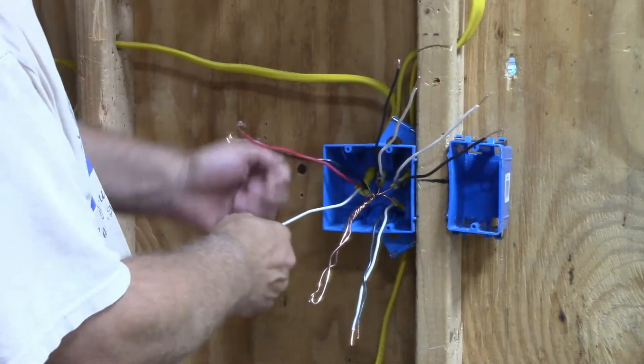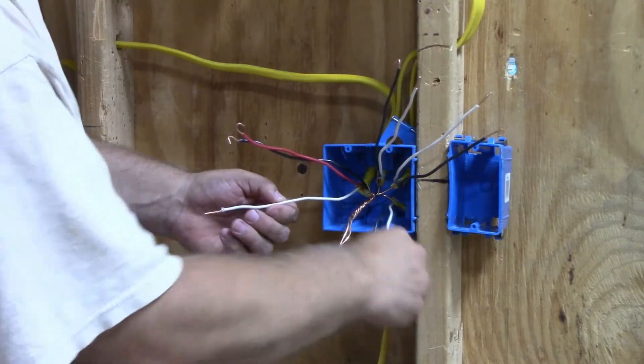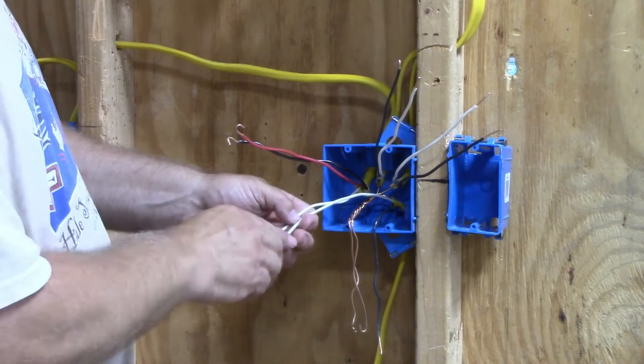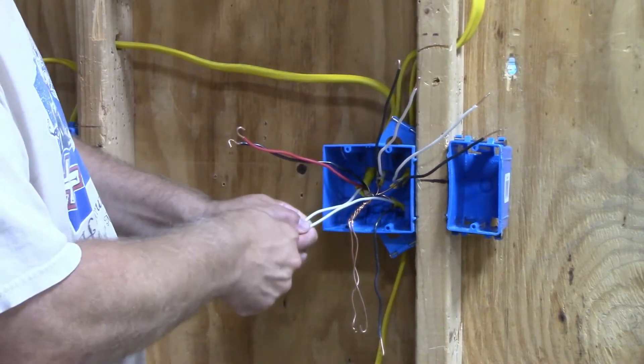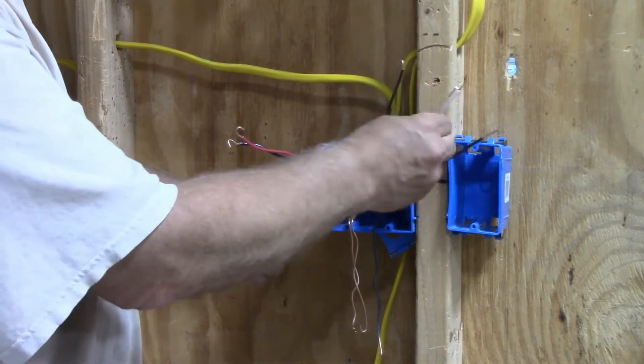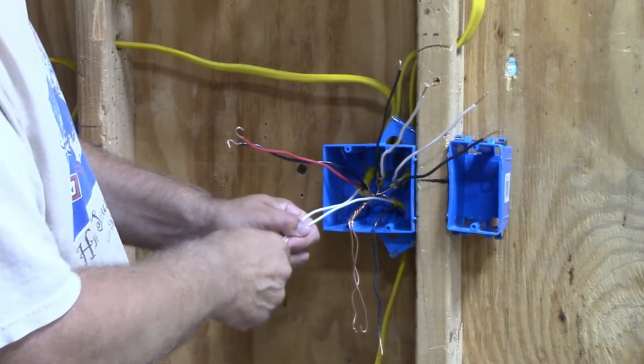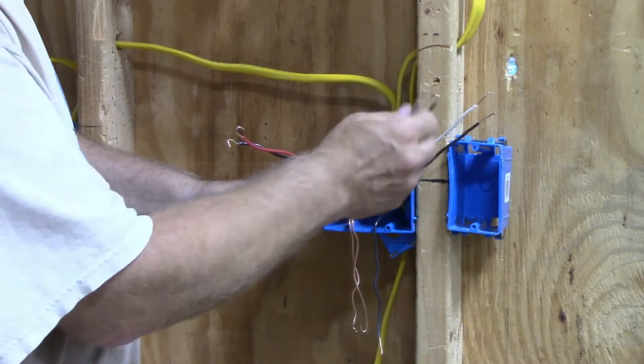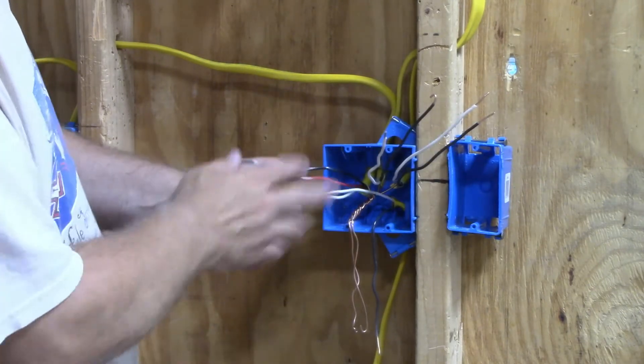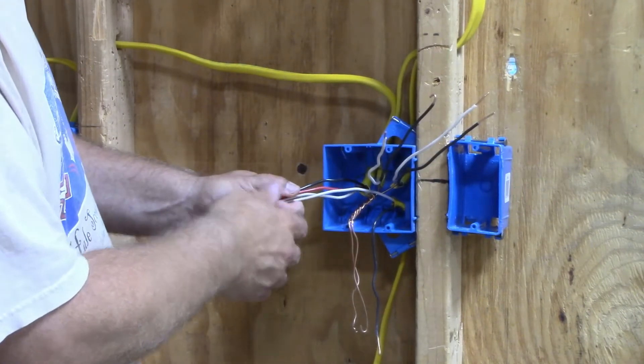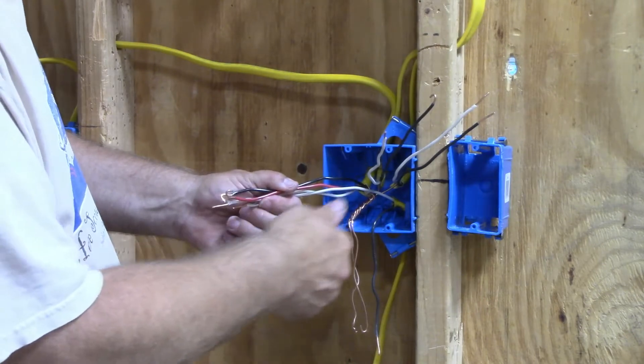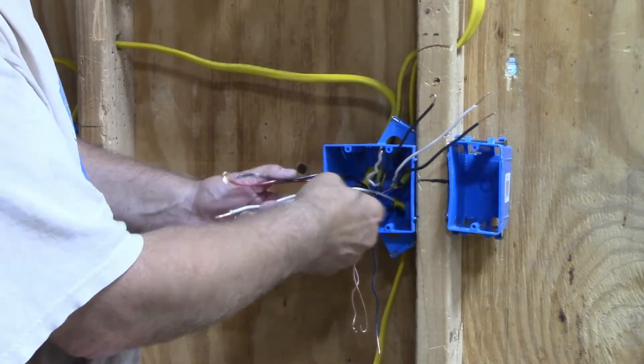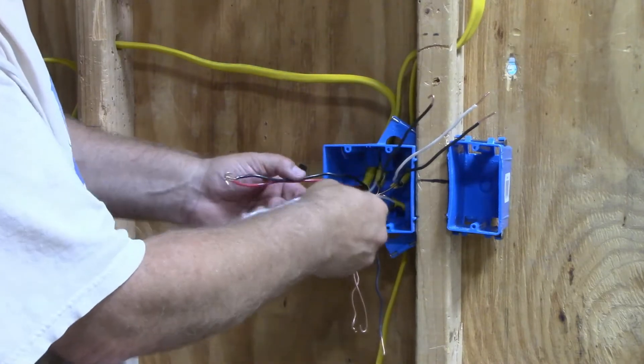When you do a box with two separate circuits, the neutral wires cannot be hooked together. I cannot take these two and hook them to these two because if I turn off this circuit and these two are hooked together, then I will get feedback through the other circuit. If I go working on it, you can get zapped. Make sure that you keep your neutral wires separate.